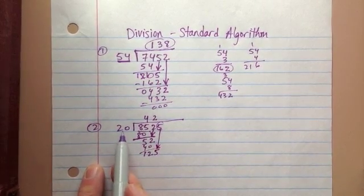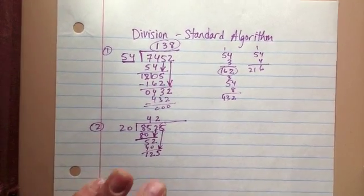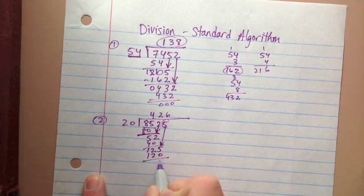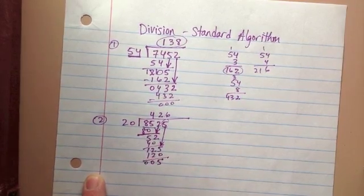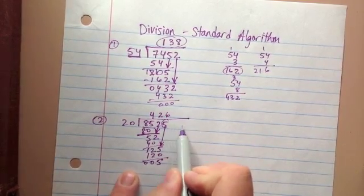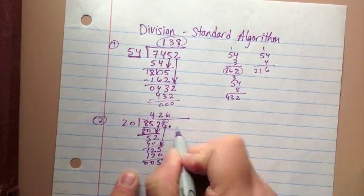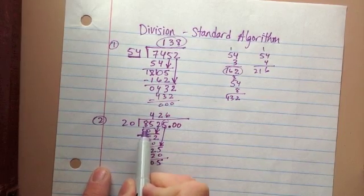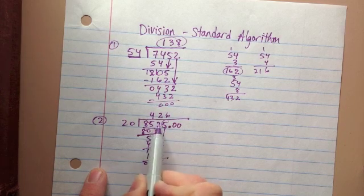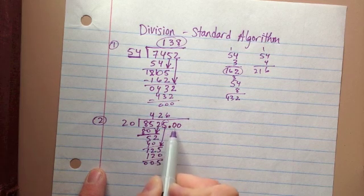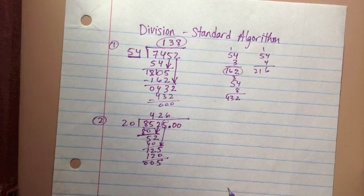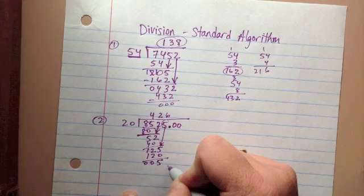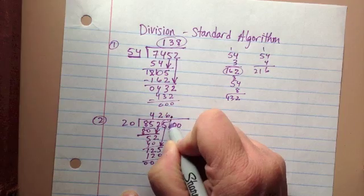125. Now how many times can 20 go into 125? Counting up: 20, 40, 60, 80, 100, 120 — that's 6 times. 6 times 20 gives me 120. 5 minus 0 is 5, and 2 minus 2 minus 1 is 0, so I have 5 left over but no more digits to bring down. What you need to do is put a decimal point here and begin using the zeros that come after the decimal point. By putting a decimal point and zeros after 8,525, I'm not changing the value of this number — that's why I can add as many zeros as I need to continue the algorithm.